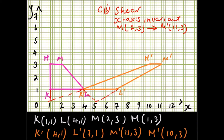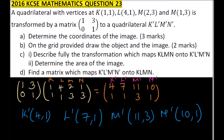For part c, roman numeral 2: find the area of the image. The image is a trapezium where K'L' is parallel to M'N'. The area of a trapezium is: add the two parallel sides — K'L' is 3 units and M'N' is 1 unit, so (3 plus 1) divided by 2, then multiplied by the height. The height is 2 units. So: 4 divided by 2 equals 2, then 2 multiplied by 2 equals 4 square units.